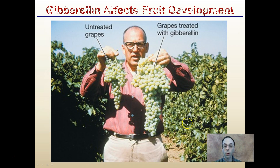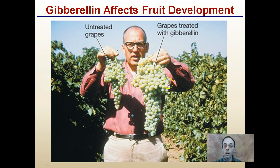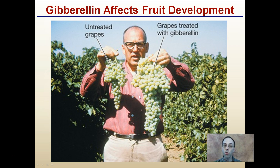Another thing GAs are used for is their effects on fruit development — grapes, for example. In this classic picture, grapes treated with GAs are much larger and look swelled up compared to untreated grapes. So if you ever see those large, plump, giant grapes, it could be a result of the plant hormone gibberellin.